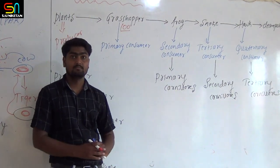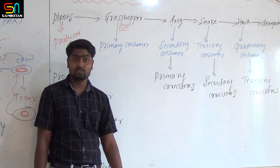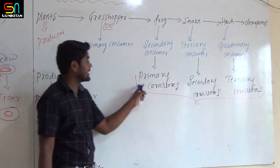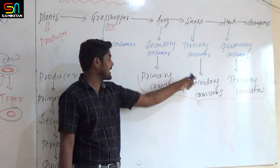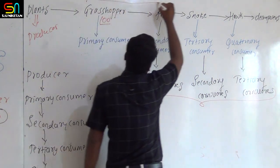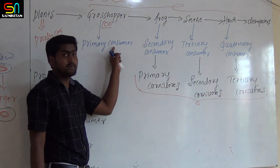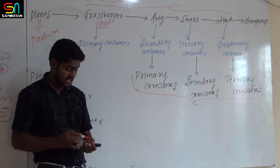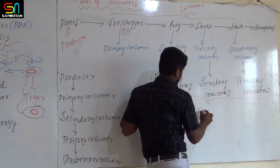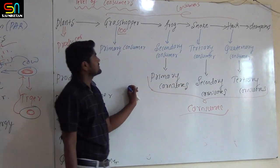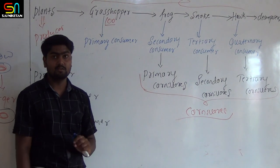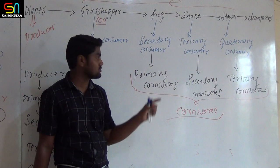Second: secondary consumer. These secondary consumers are also called primary carnivores. The organism which feeds on the primary consumer is called the secondary consumer. Example: frog. It is also called primary carnivore.